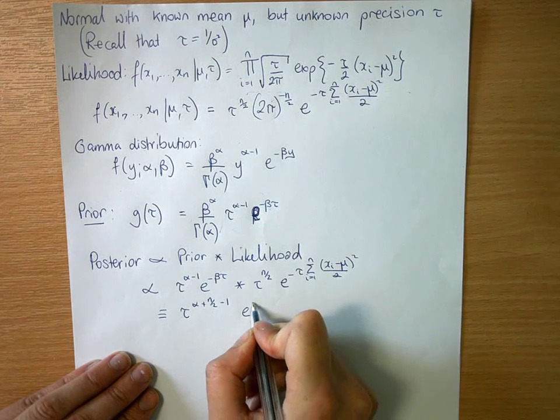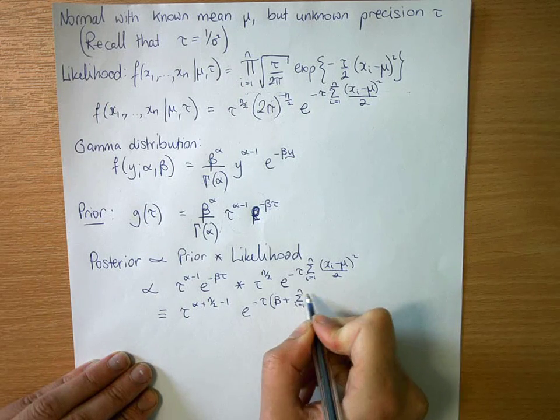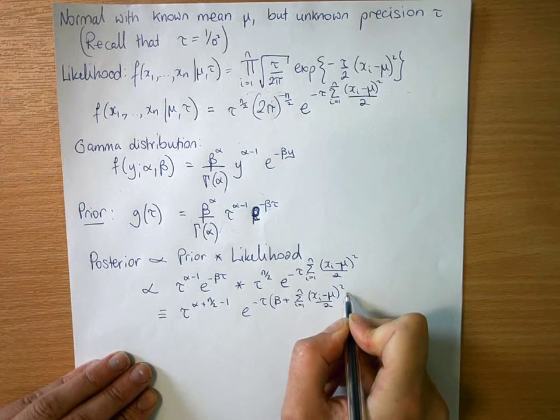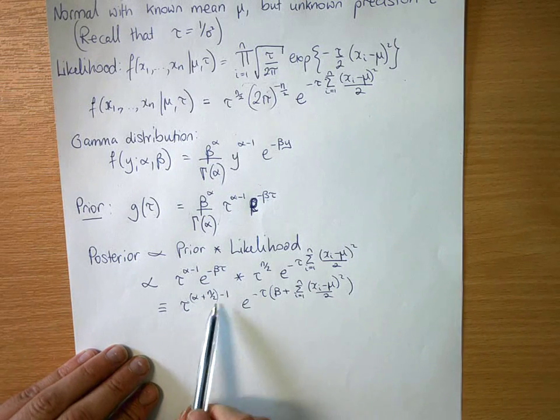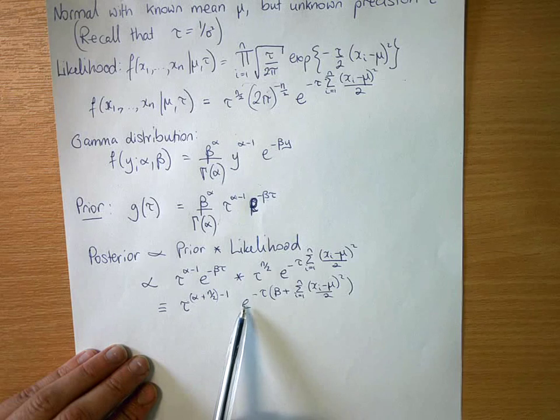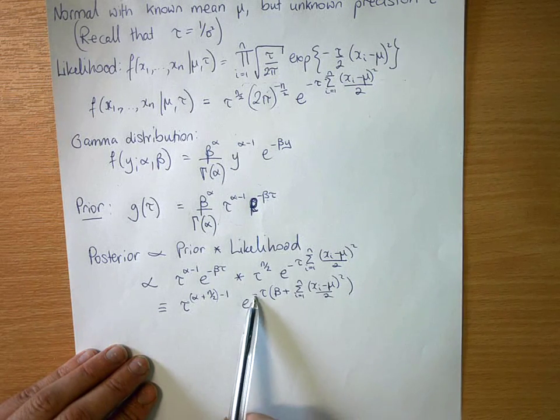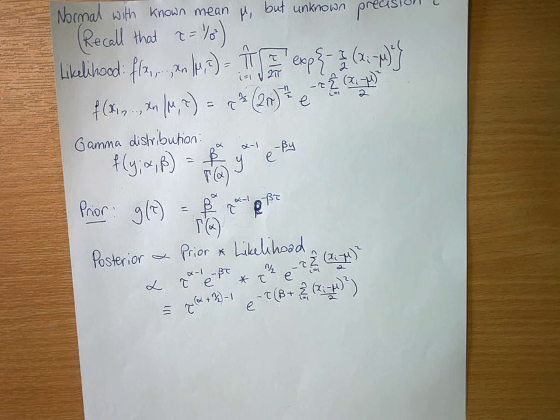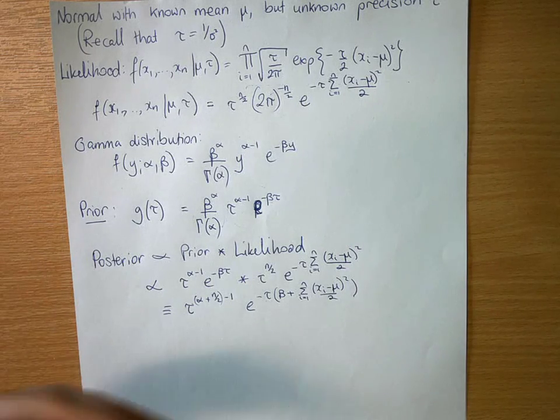So again, we see if we were to group these together nicely, we have tau to the power of something. So this is something minus 1, times e to the minus tau, so exponential of minus tau times something else. This is the same functional form as a gamma distribution, and this is why it's extremely important to know the functional forms of different distributions when you're trying to think and show conjugacy.